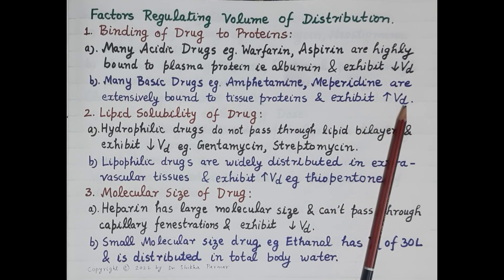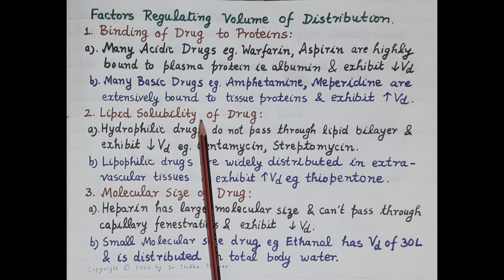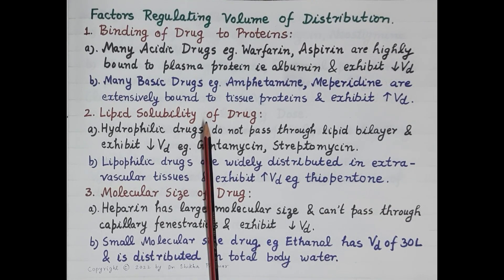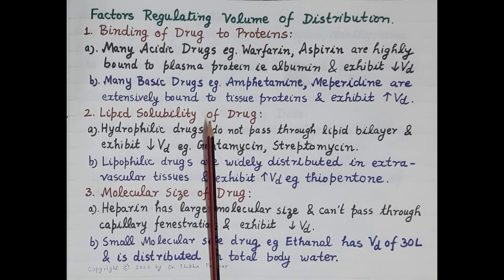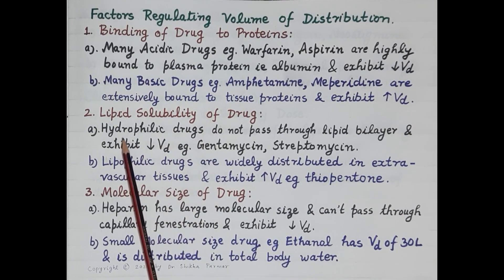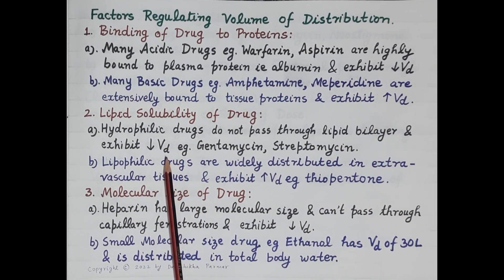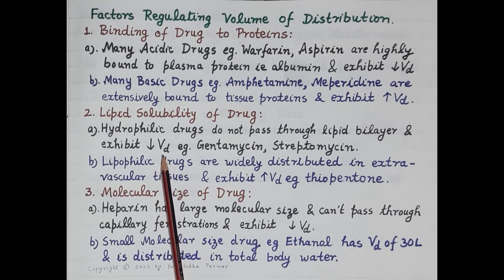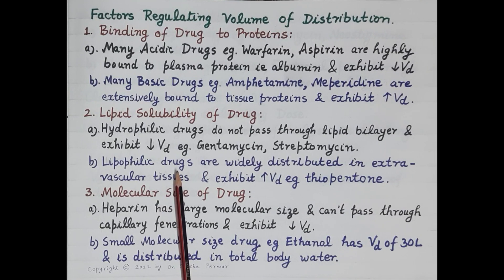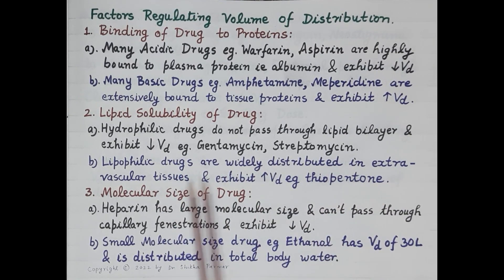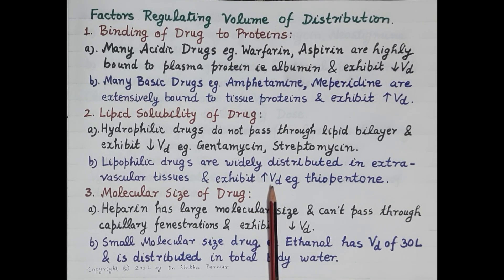The second important factor is lipid solubility of the drug. Cell membranes are made up of phospholipids, so lipid-soluble drugs easily pass through cell membranes and are widely distributed in extravascular tissues. Water-soluble drugs do not pass through cell membranes and remain confined to the blood plasma. Hydrophilic drugs do not pass through the lipid bilayer and exhibit low volume of distribution — for example, gentamicin and streptomycin. Lipid-soluble drugs pass through cell membranes, are widely distributed in extravascular tissues, and exhibit high volume of distribution — for example, thiopentone.